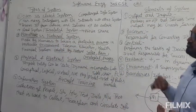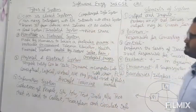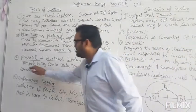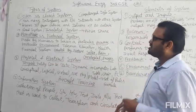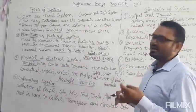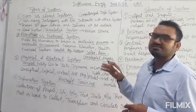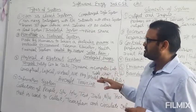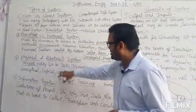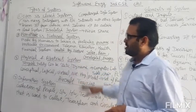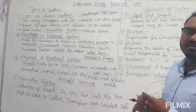The third category is physical versus abstract system. Physical means a tangible entity — tangible means something that takes up space or which we can feel, has weight. A physical system can be static or can be dynamic.